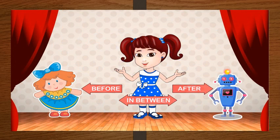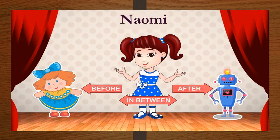In this figure, we can see the position of the little girl, Naomi, her doll, Bianca, and her robot, Atom.